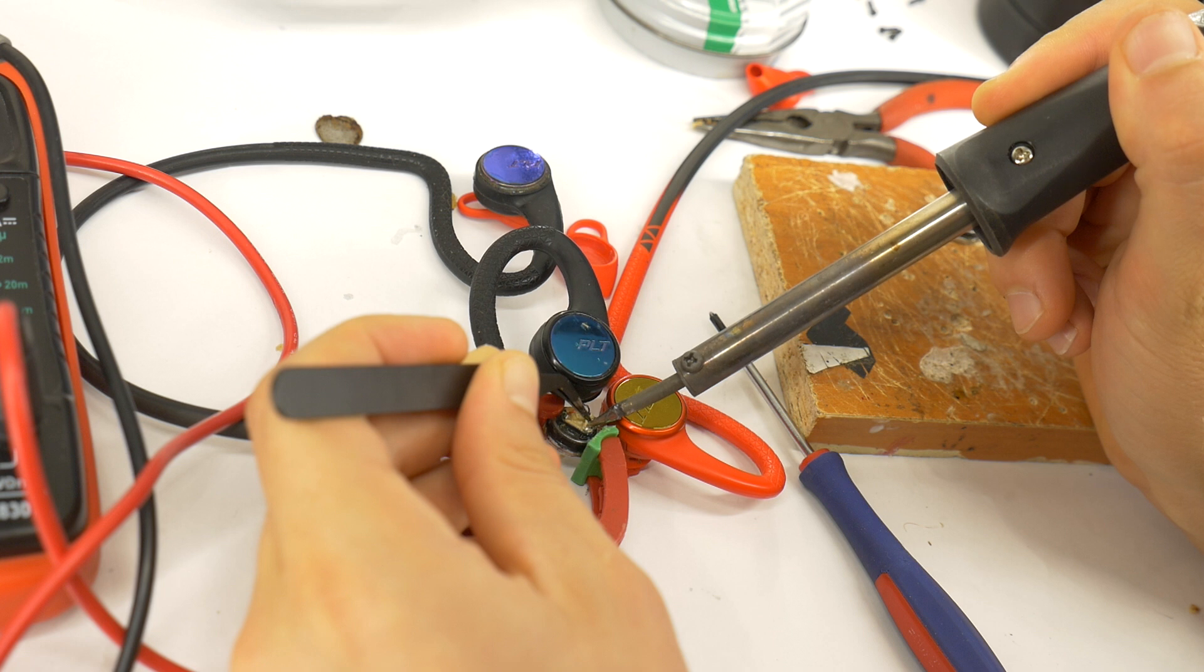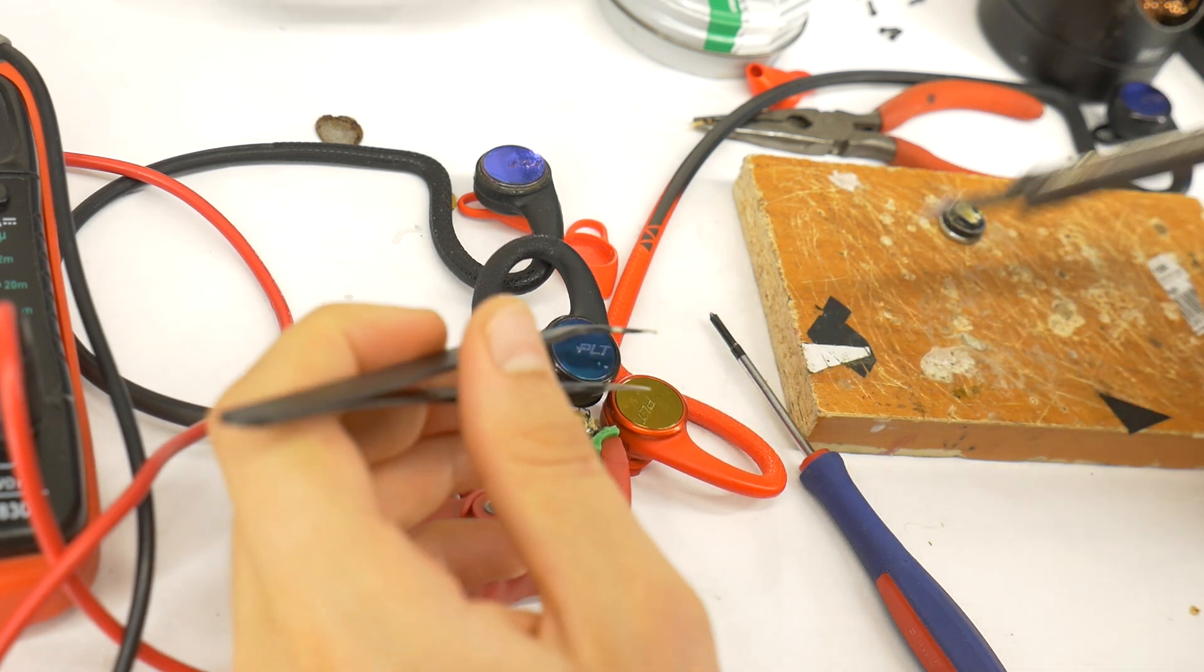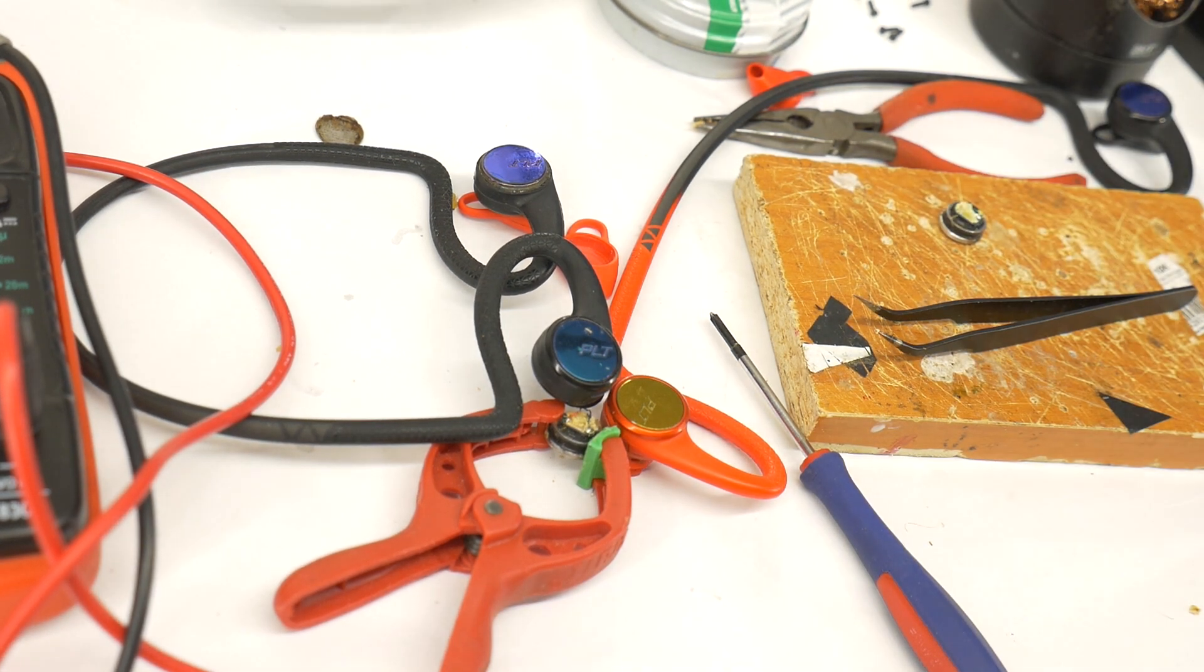It's important to remember which color wires were connected to which contact on the dead speaker, as you will need to solder the wires in the same order on the replacement speaker.